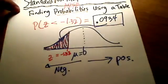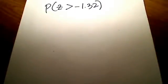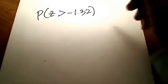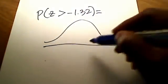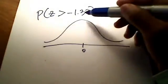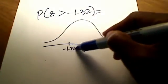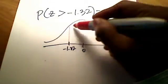Let's change the problem up a little bit. What if they're asking for something like this? What's the probability that z is greater than negative 1.32? So now this time, we're not looking for less than. We're not going to shade to the left. This time, we're going to shade to the right.